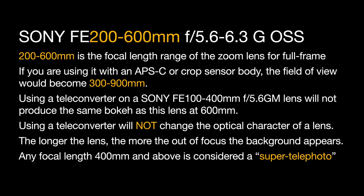The 200-600mm is the focal length range of the zoom lens for full frame. If you're using this lens with an APS-C or crop sensor body, the field of view would become 300-900mm. Using a teleconverter on a Sony FE 100-400mm 5.6 G Master lens will not produce the same bokeh as this lens at 600mm. Focal length always trumps anything converted. Using a teleconverter will not change the optical character of a lens; it just looks to the center of it, or less of the optic.